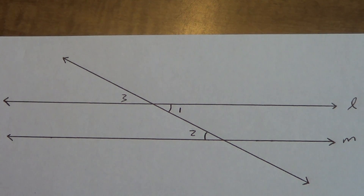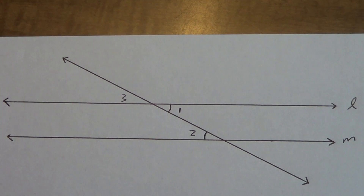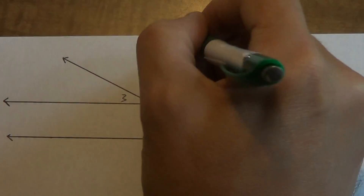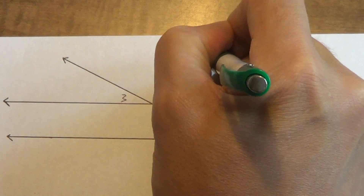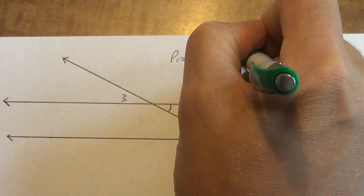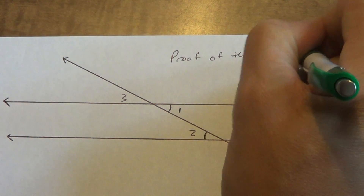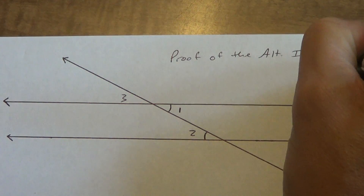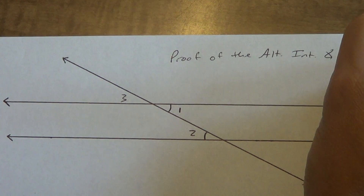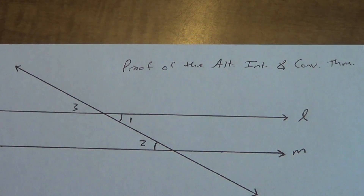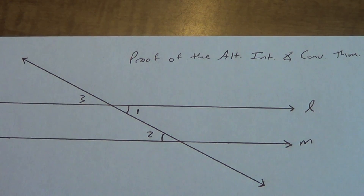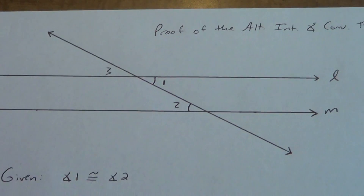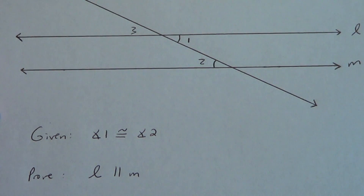This one right here, we're going to work on proving the Alternate Interior Angle Converse Theorem is true. I'll write that up at the top: proof of the Alternate Interior Angle Converse Theorem. Copy this picture down on your notes — pause it if you need to because I'm going to move right into the proof. Here's your given and what we're trying to prove.